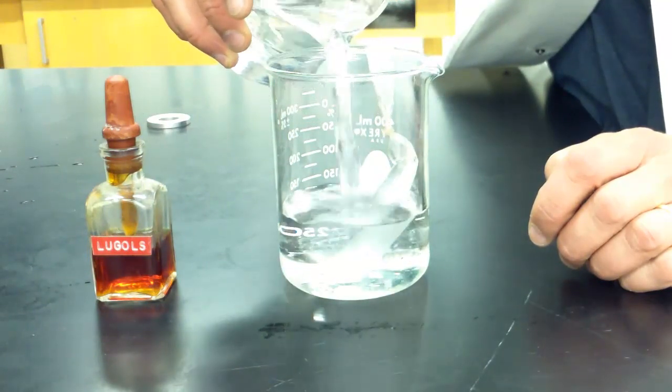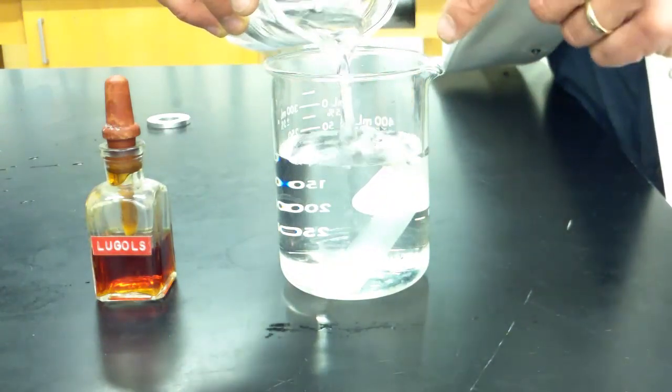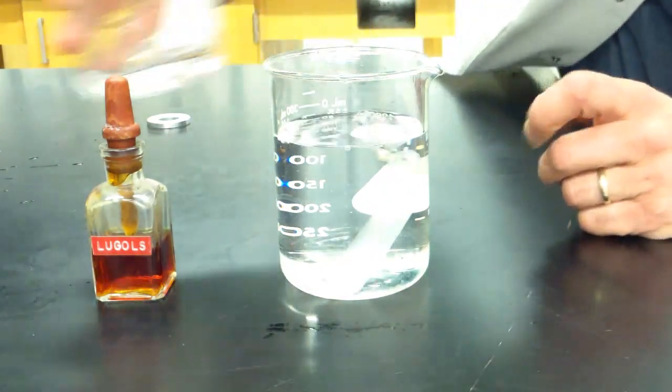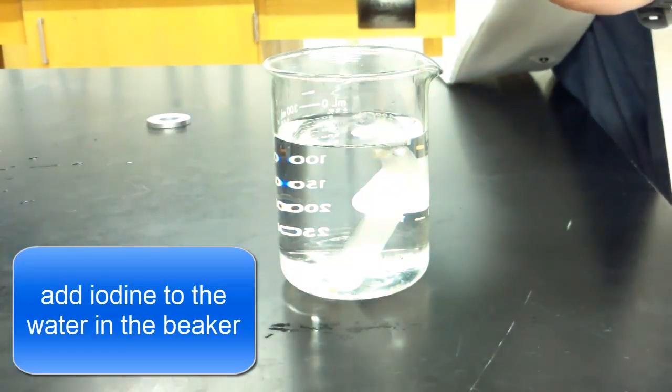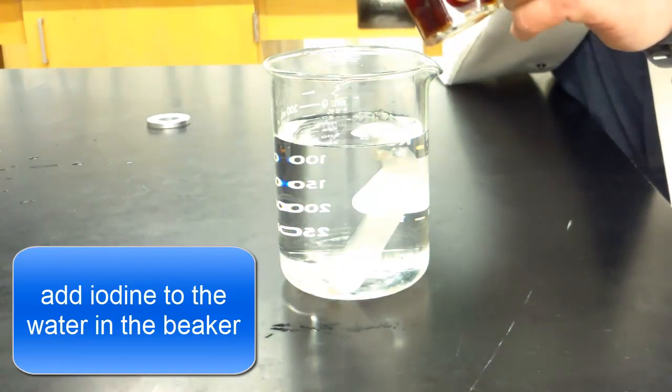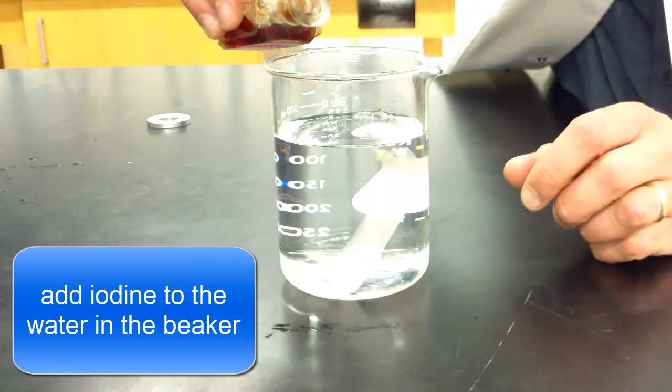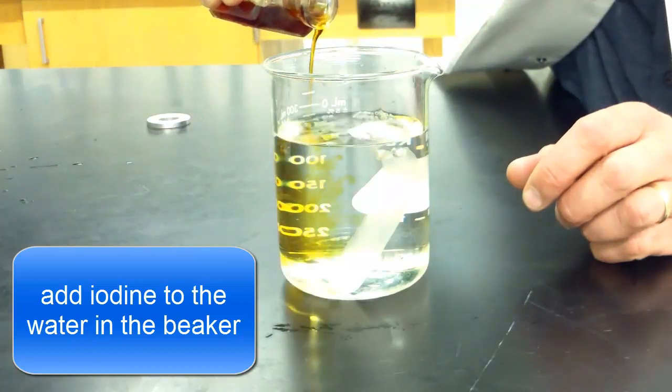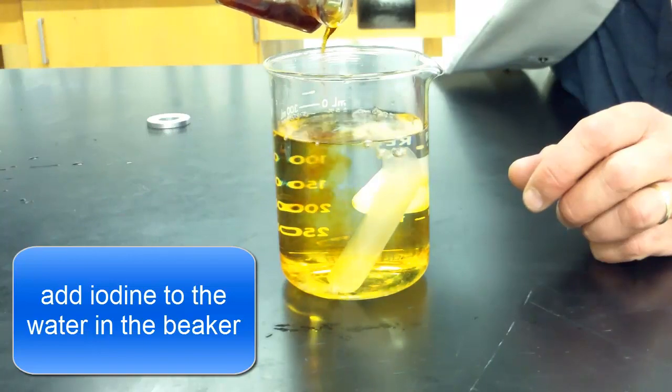You can use the sink. I have a beaker here that I'm using to fill it. And just fill it enough so that the entire cell is submerged in the water. And now you want to add several drops of iodine. And this looks like this stopper isn't working. I'm just going to pour it. You're going to add some iodine until you get the beaker a nice amber color.